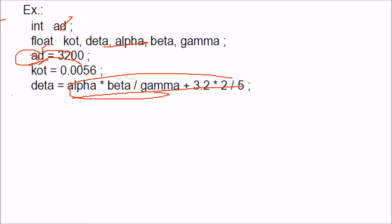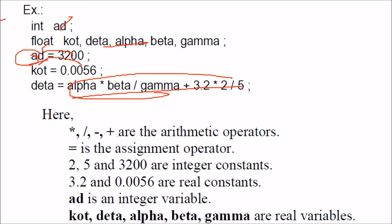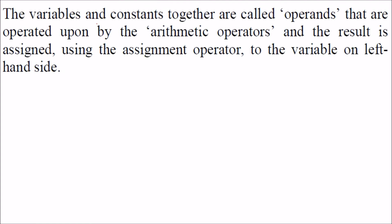We have operators here. Single equals is the assignment operator. Double equals we will discuss later—it checks if values are equal or not. These are integer constants, these are real constants. This is an integer variable, and these are real variables. The variables and constants are called operands, and they are operated upon by arithmetic operators.